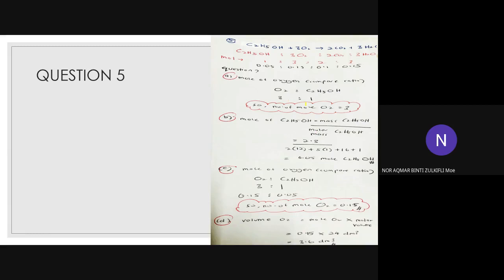Last question, number 5: (a) number of moles of oxygen = 3, (b) 0.05 mol, (c) 0.15, and (d) volume = 3.6 dm³. For question 5 I hope you understand enough. You need to make the ratio comparison first to make it easier. For part (a), number of moles of oxygen — no information is given, so you just compare from the equation.